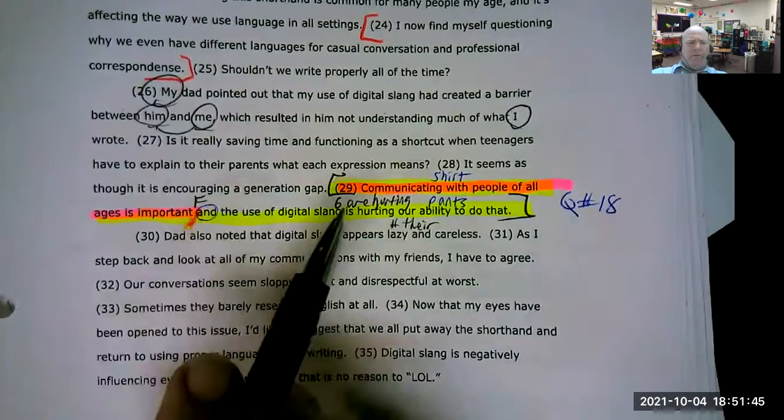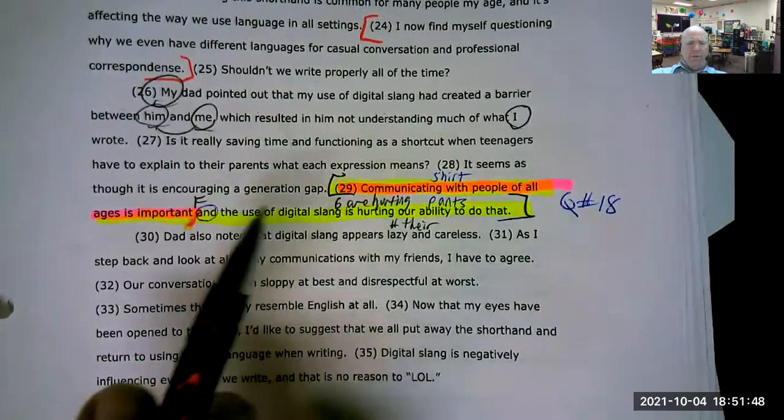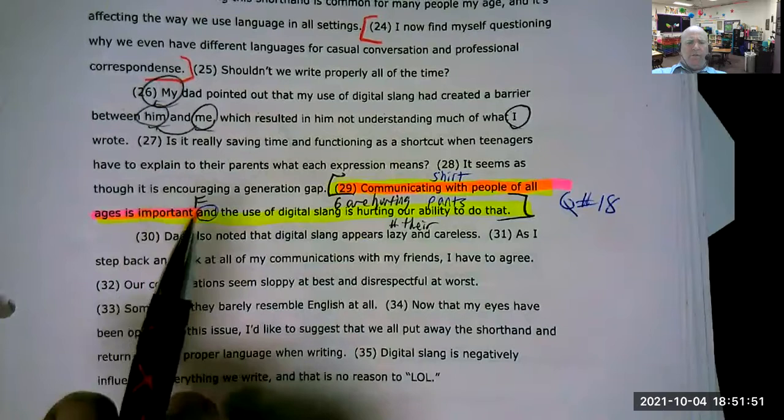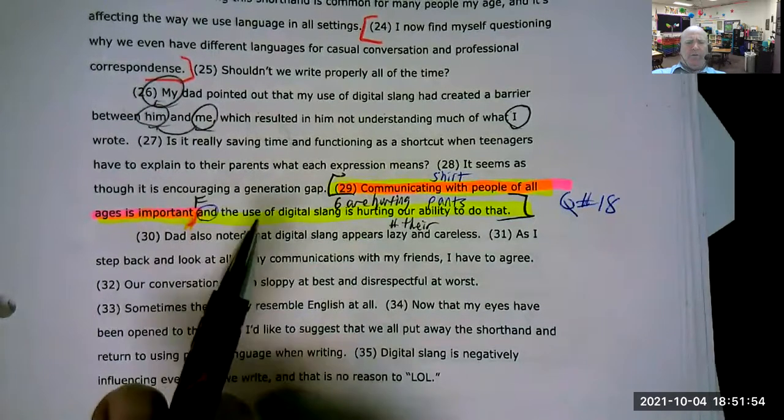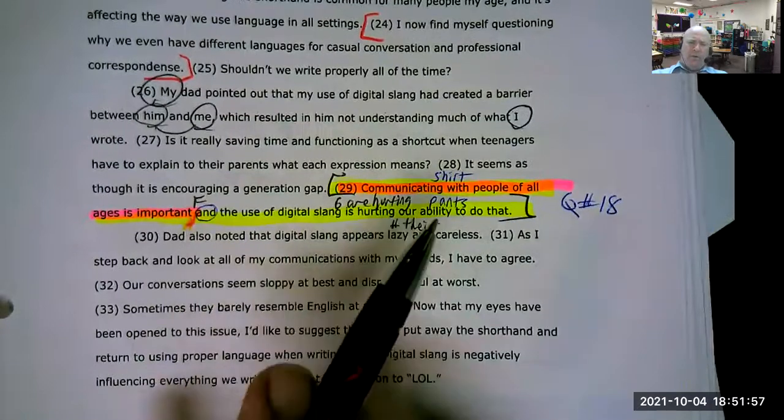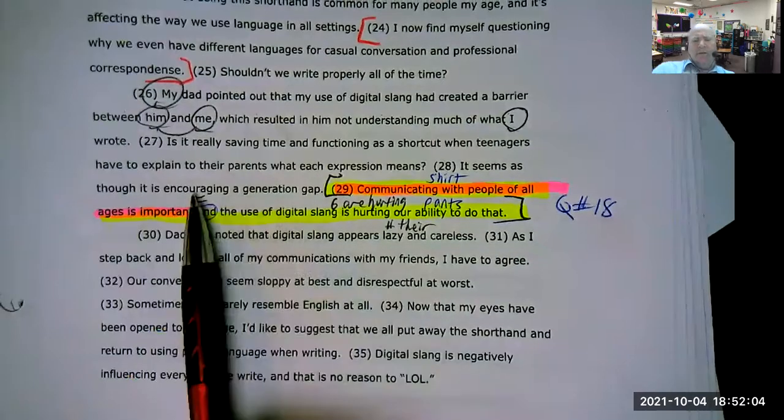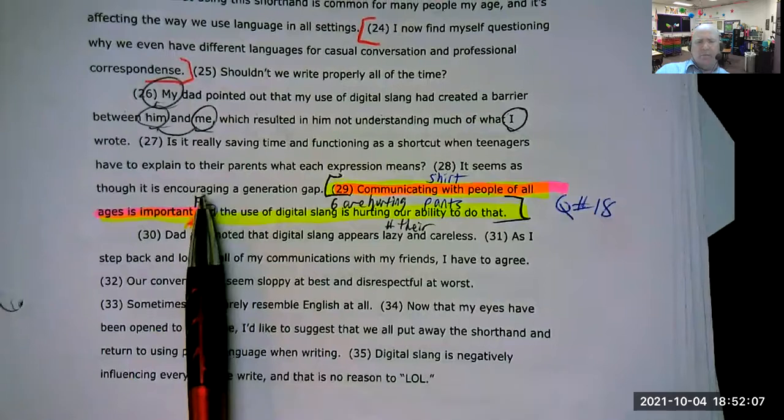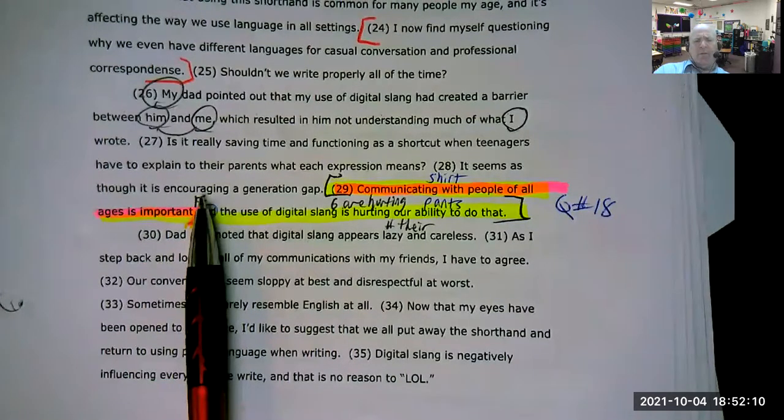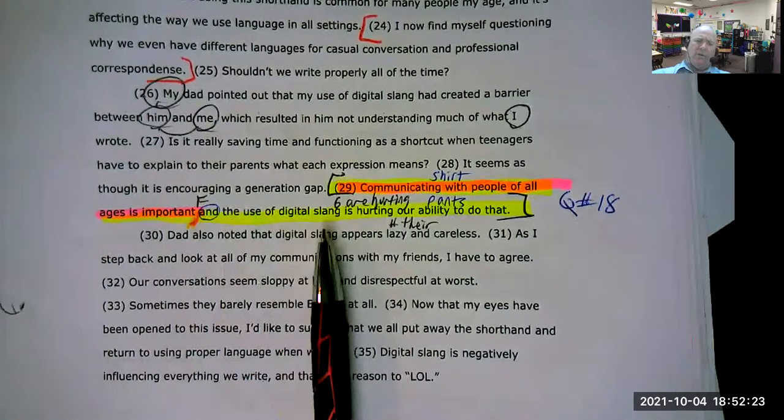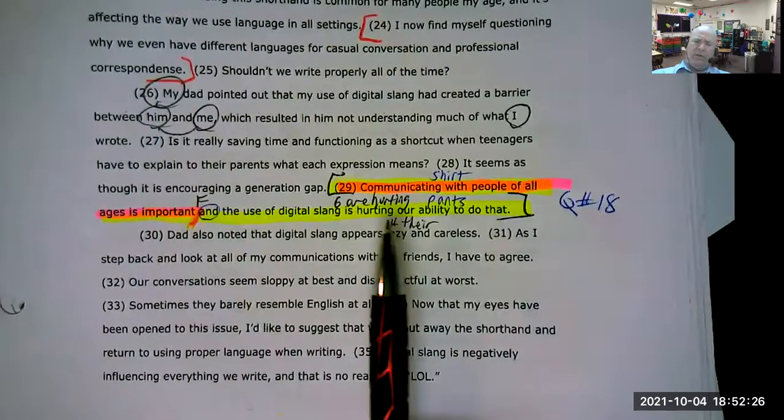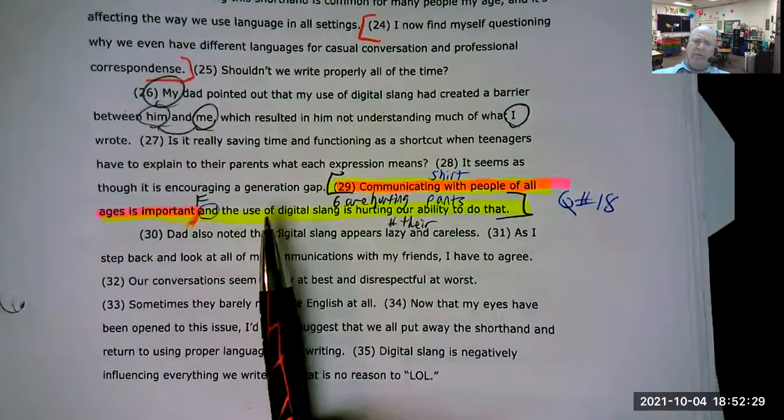Capital. Communicating with people of all ages is important, comma, and the use of digital slang is hurting our ability to do that. So if you were to separate and place this shirt by itself and it makes sense, then it's an independent clause. Communicating with people of all ages is important. Communication is my subject. It's important. It's my predicate, my action. The use of digital slang is hurting our ability to do that. The use. And it's hurting. So those can be by themselves.